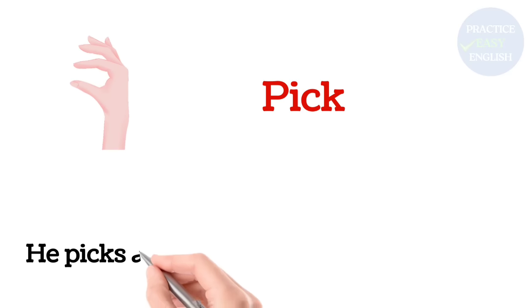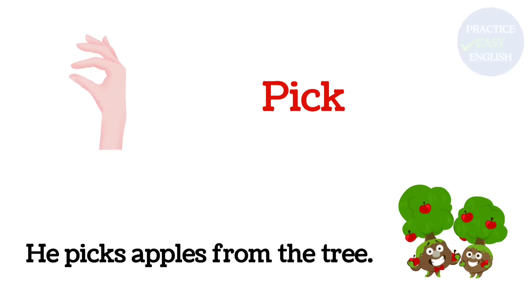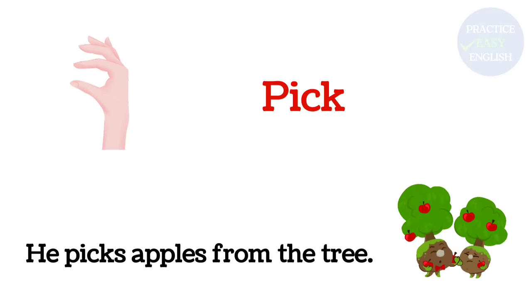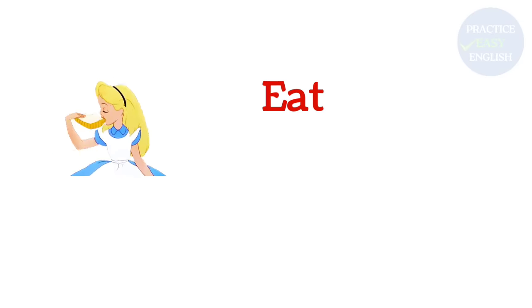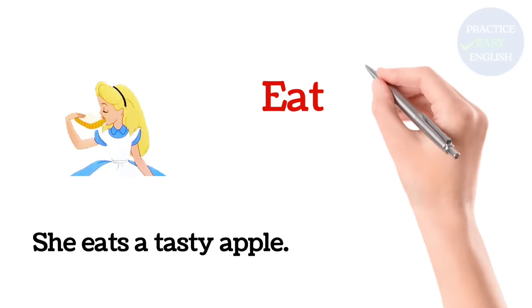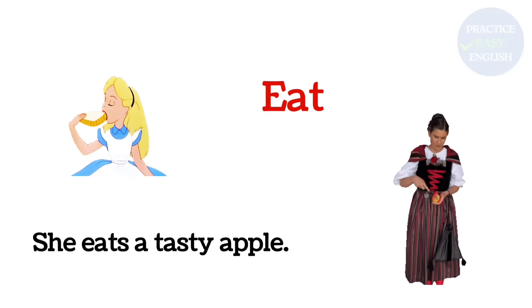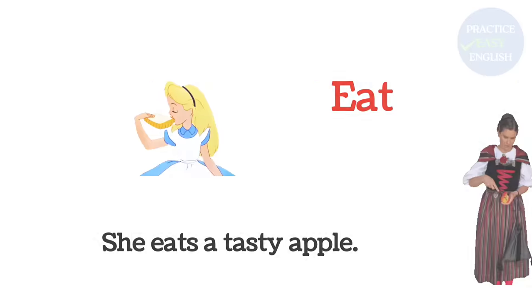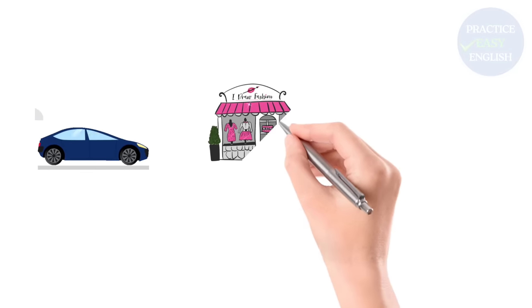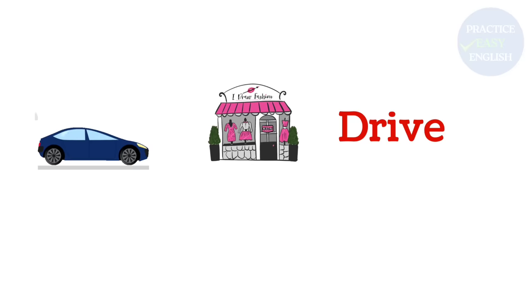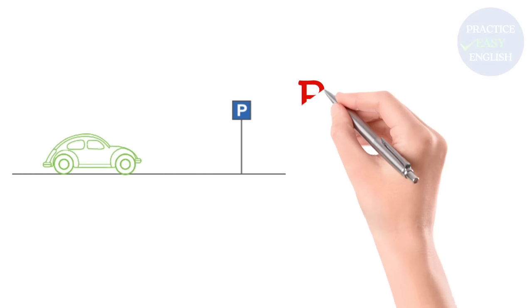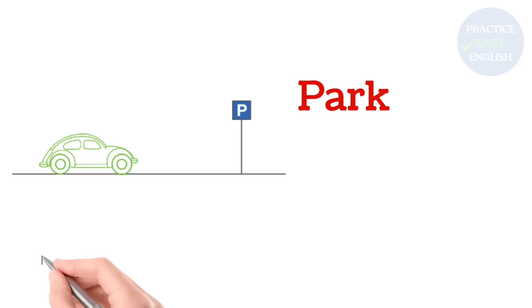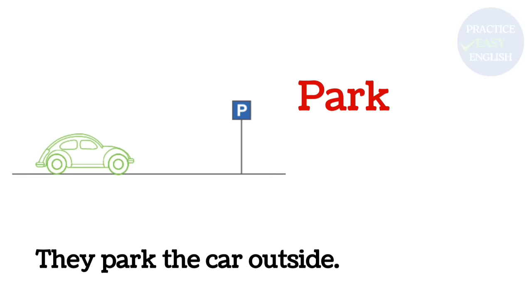Pick. He picks apples from the tree. Eat. She eats a tasty apple. Drive. I drive to the store. Park. They park the car outside.